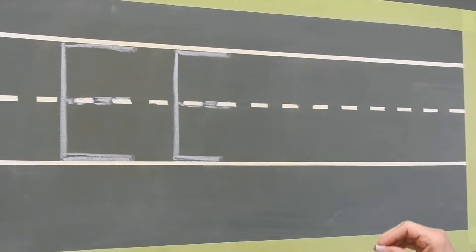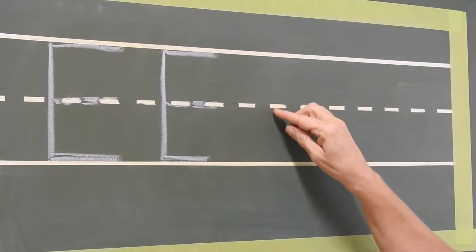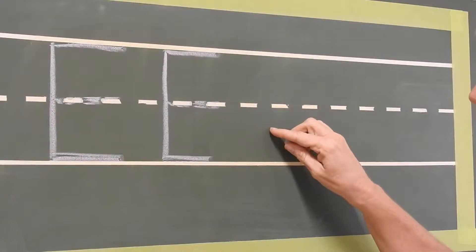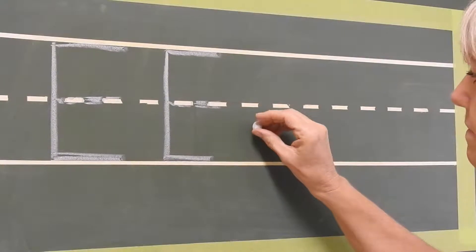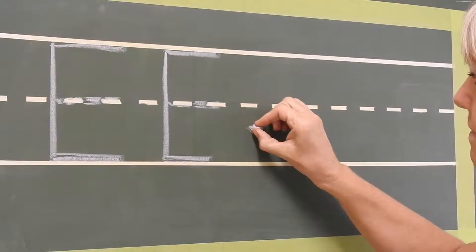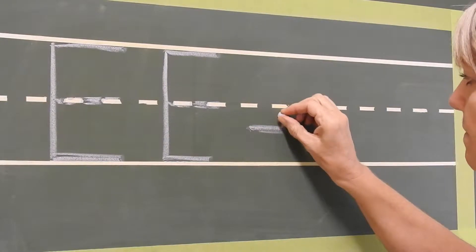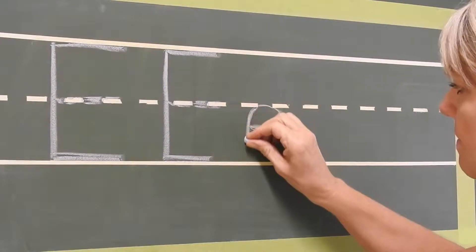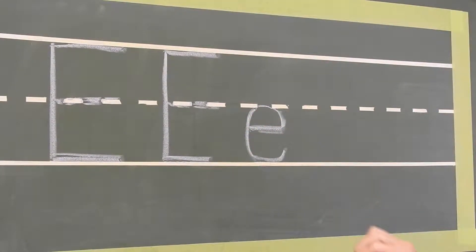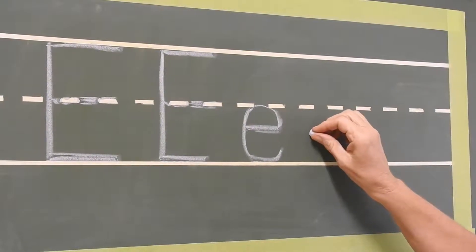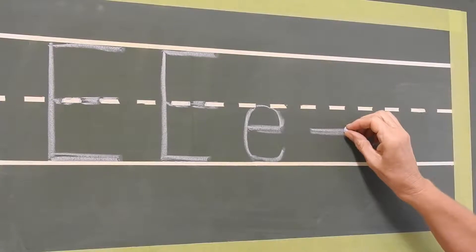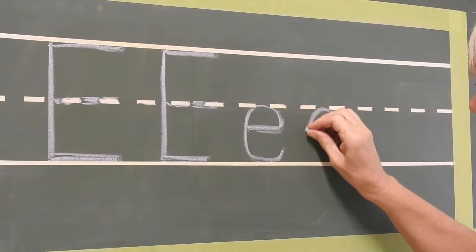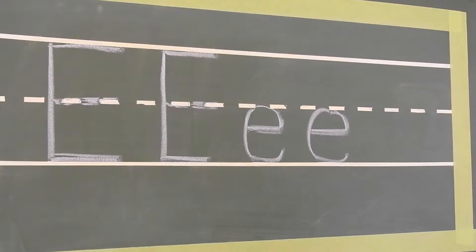Now when we make the lowercase we have to start kind of in the middle between the dash and the bottom line. So it's a little tricky. Watch carefully where Miss Diane starts. We go over, curve up and around. Look again how we start between the dash and the bottom line. Go over, curve up and around. And that's the letter E.